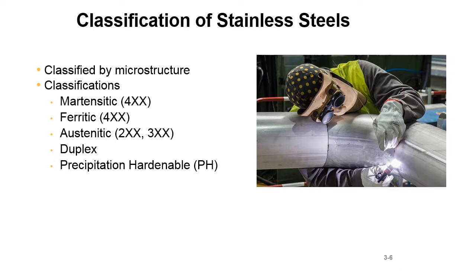A lot of times people ask about stainless steel and you ask, 'Well, what kind is it?' and they're like, 'I don't know, it's stainless.' Well, that doesn't narrow it down very much. Generally there are about a half dozen different kinds depending on your application. A lot of times you'll run into an austenitic and occasionally a martensitic. In oil and gas you'll run into a duplex, and sometimes precipitation hardenable.